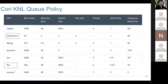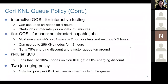For the KNL queue policy, I want to mention the interactive and flex QoS options. For interactive QoS, you can use up to 64 nodes for four hours. It's great for instant testing. When you want to do small or quick testing, this works great for most users.